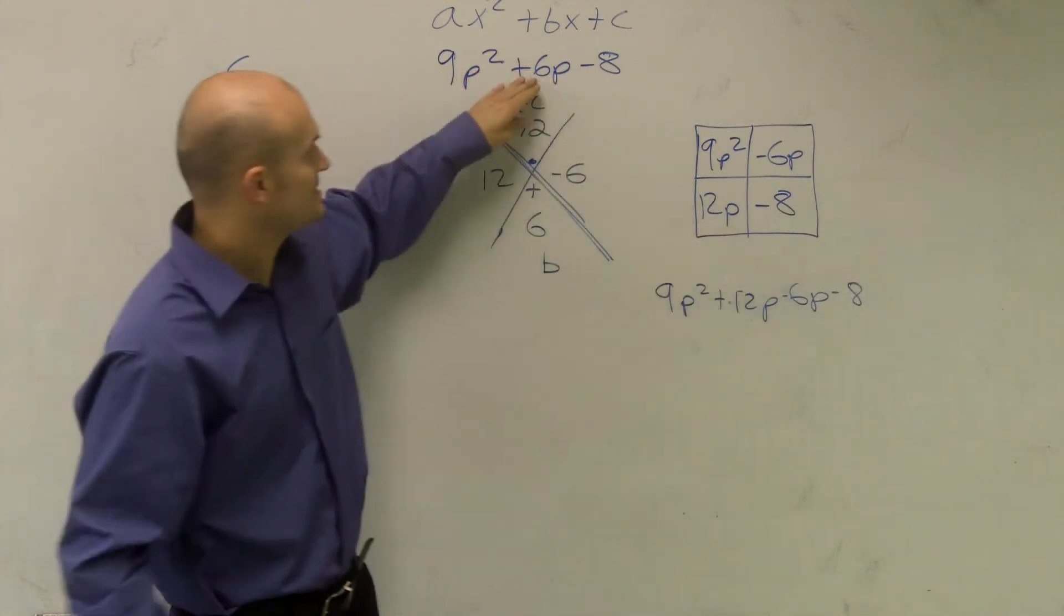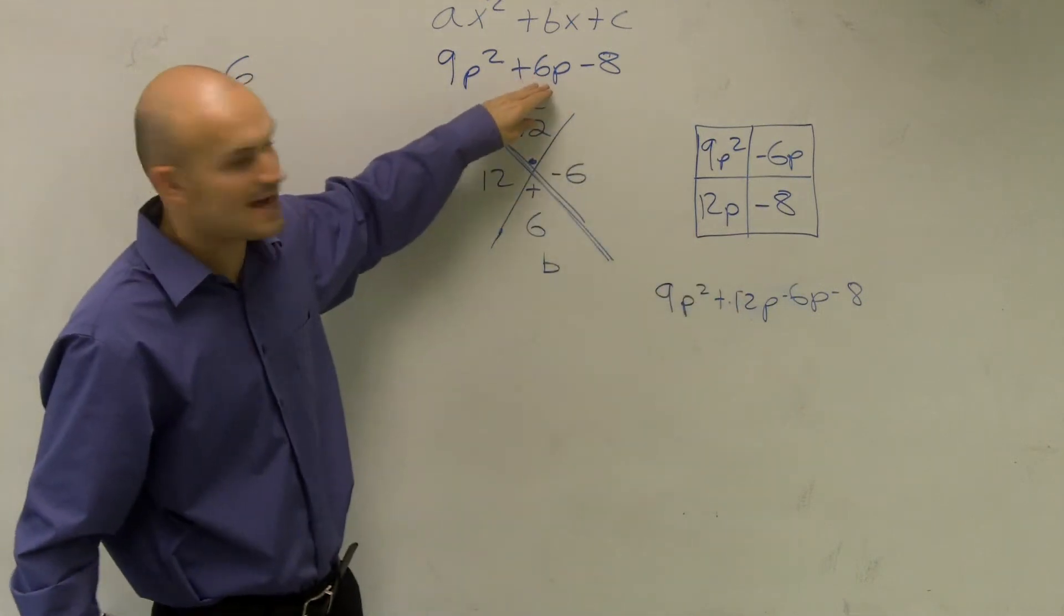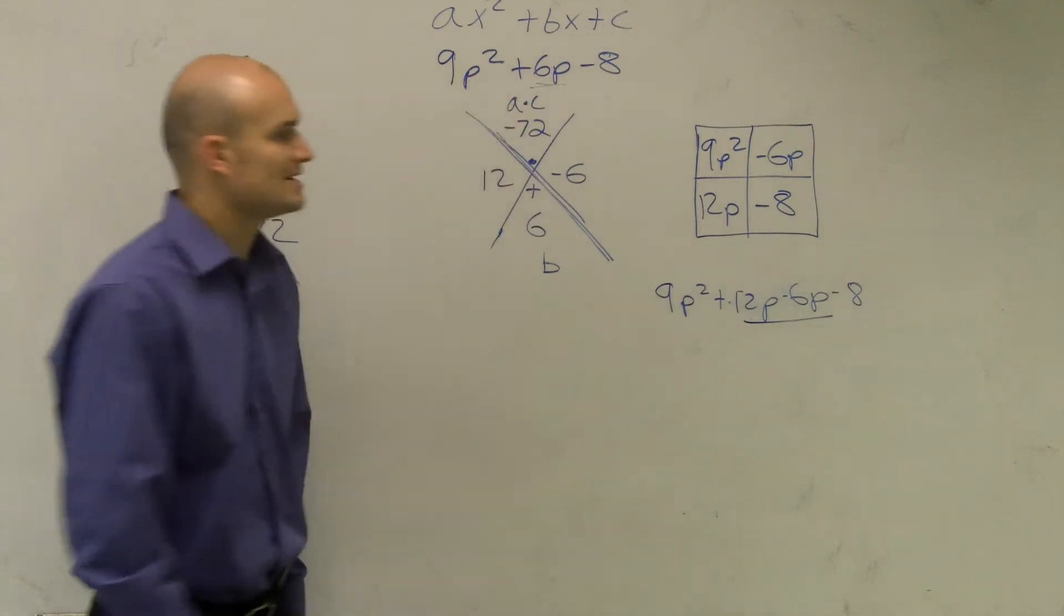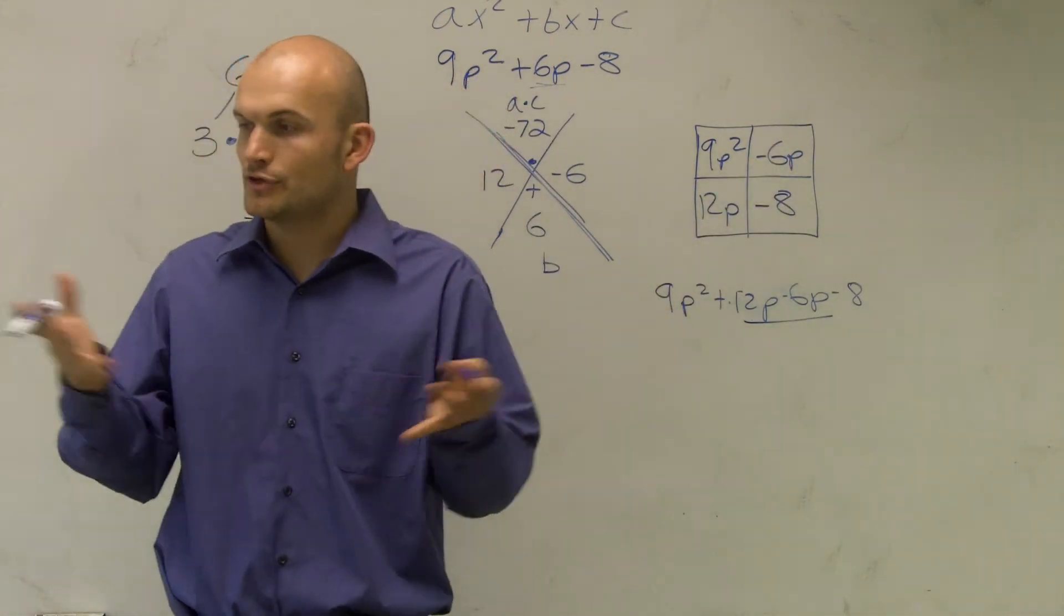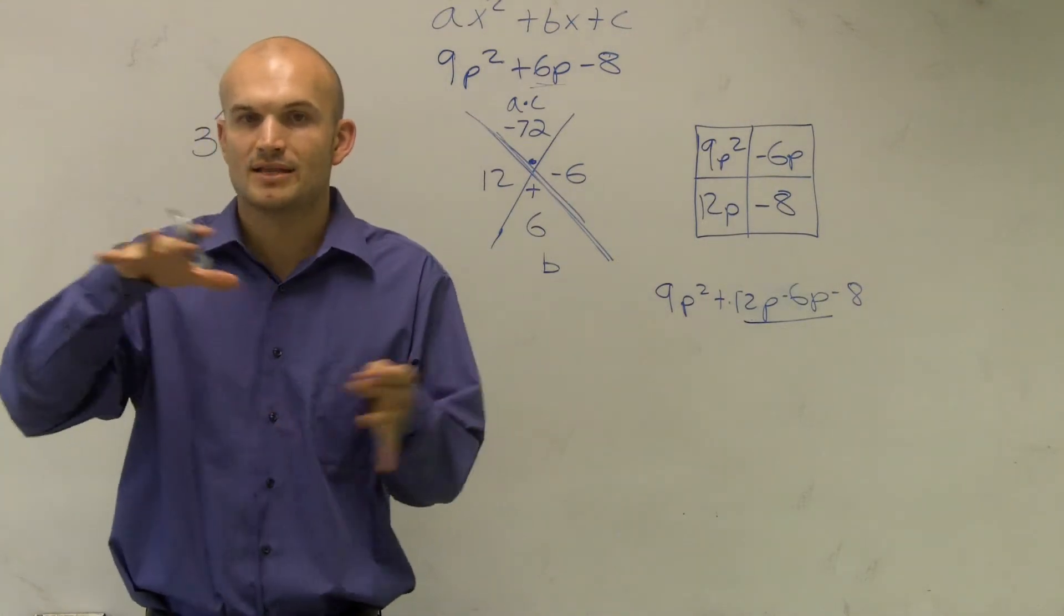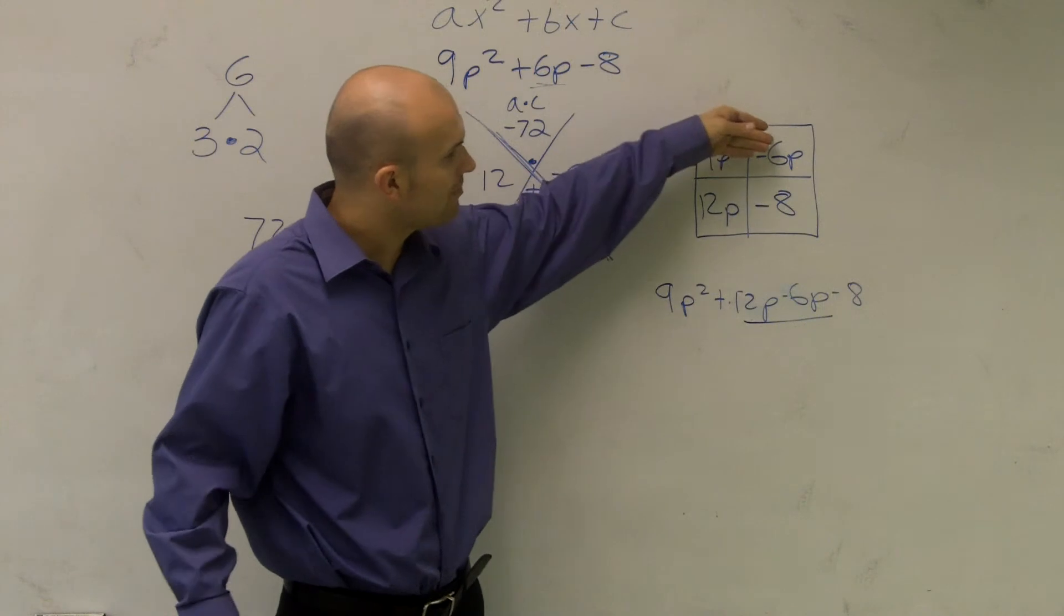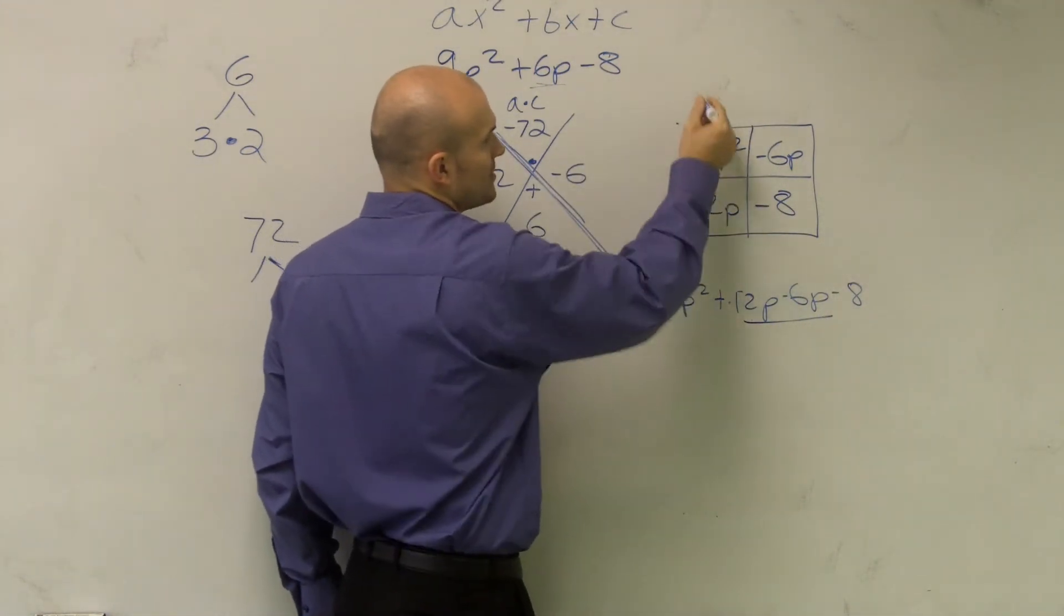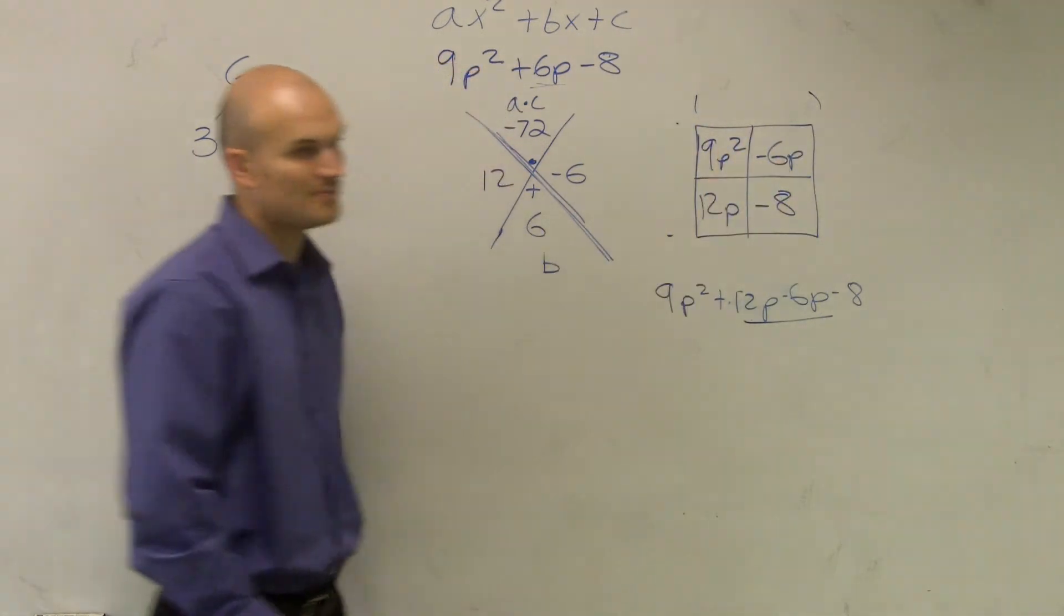if I rewrite it as 9p² + 6p minus, sorry, + 12p - 6p - 8, this still has the exact same mathematical value as that. But now what I did is I changed, instead of 6p, I wrote it as 12p - 6p. And what I did is I plugged them into this box. So what we can do is, if you're used to taking those two binomials, making them a length or a width, multiplying them to find your area, I can now plug them in to now find,